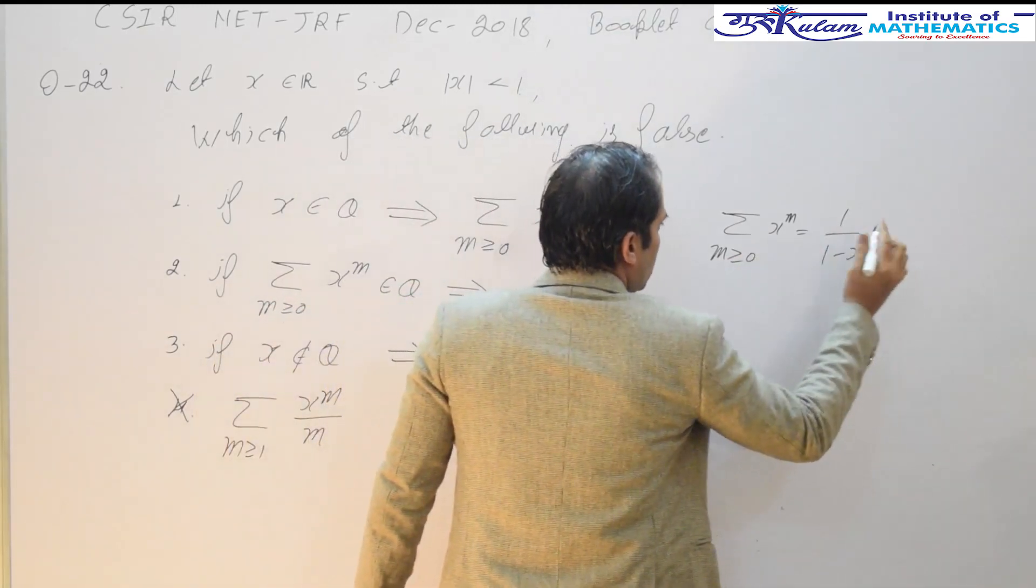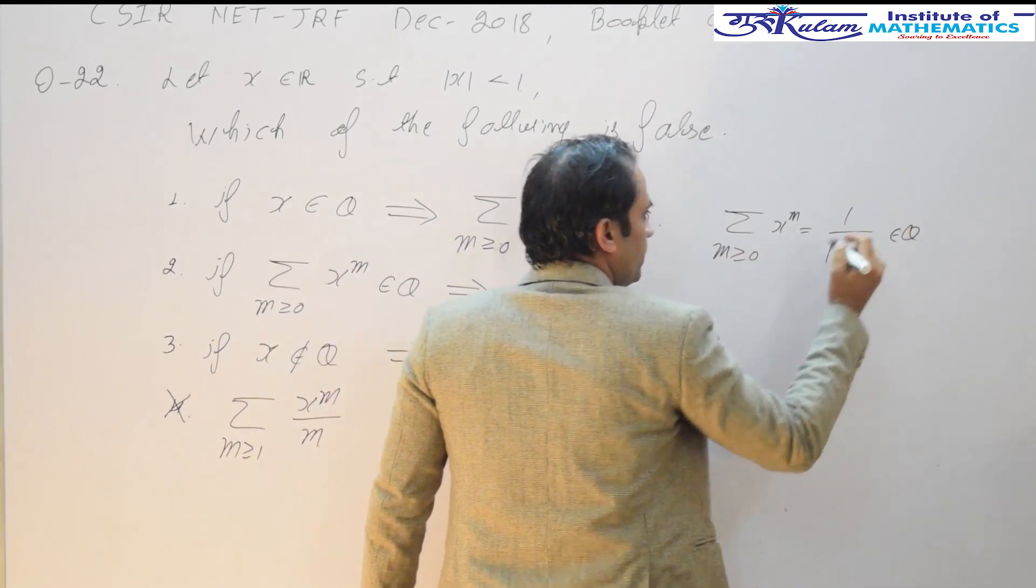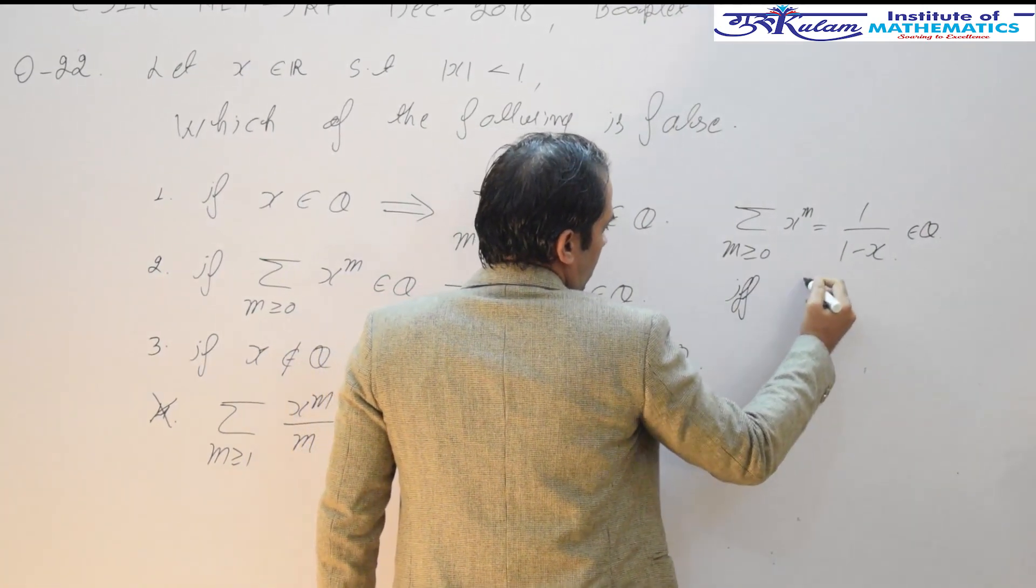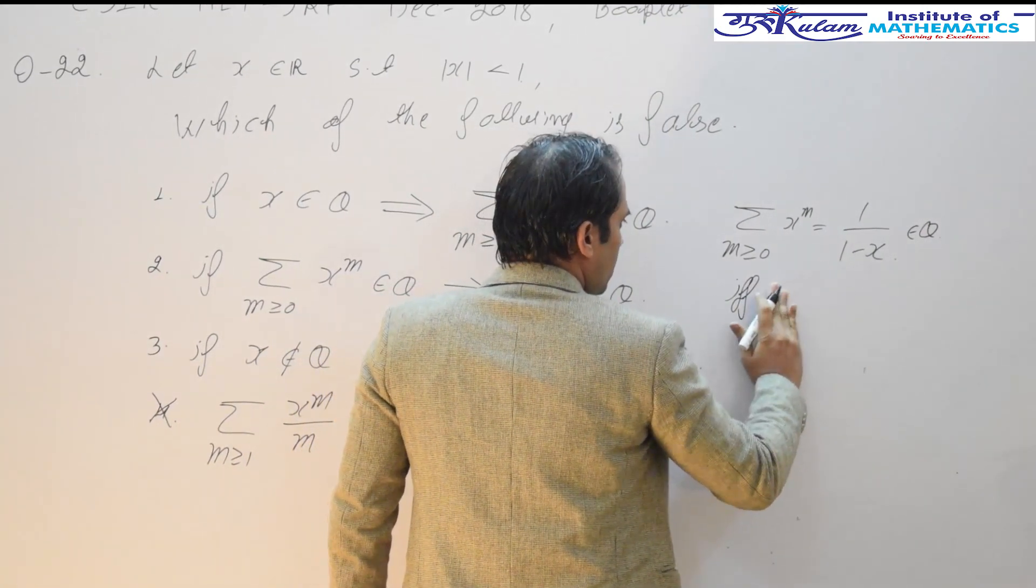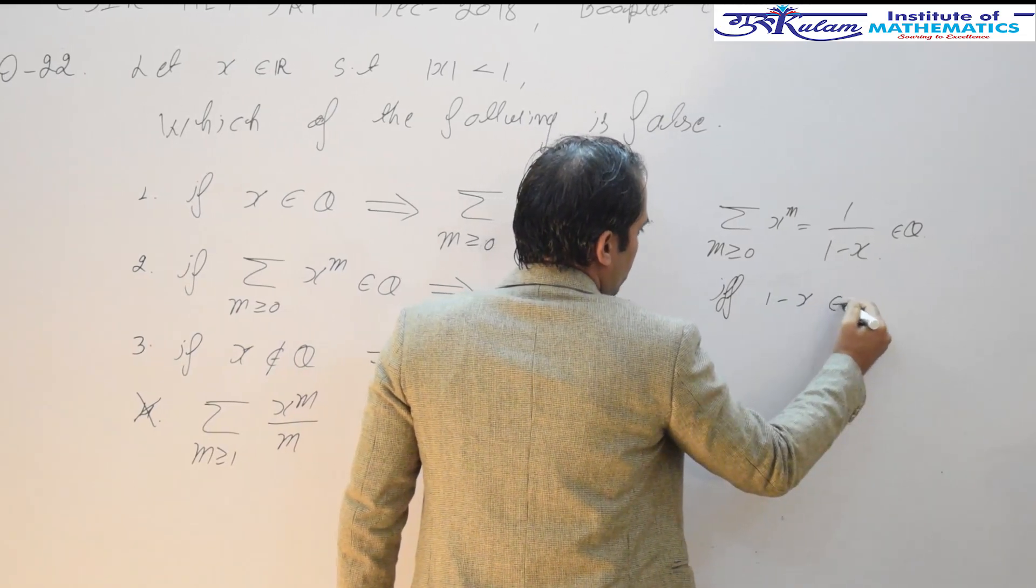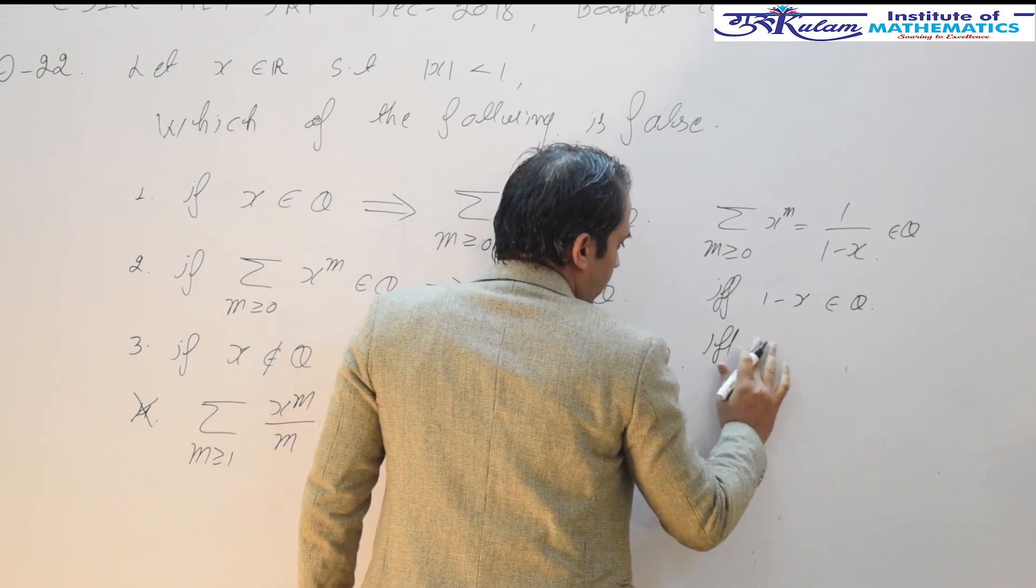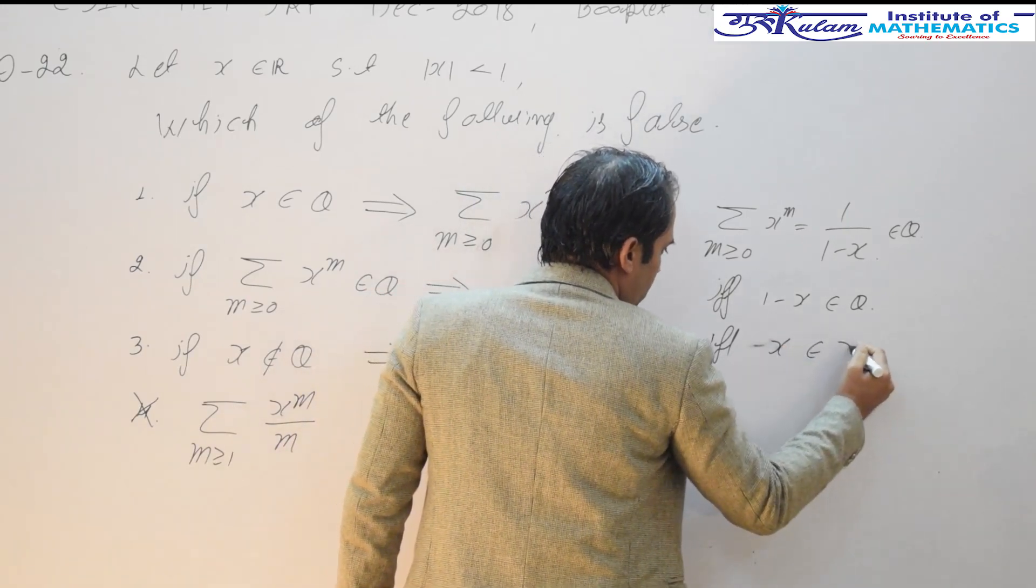Now, if this quantity belonging to Q, if and only if 1 minus x belonging to Q, if and only if minus x or x belonging to Q.